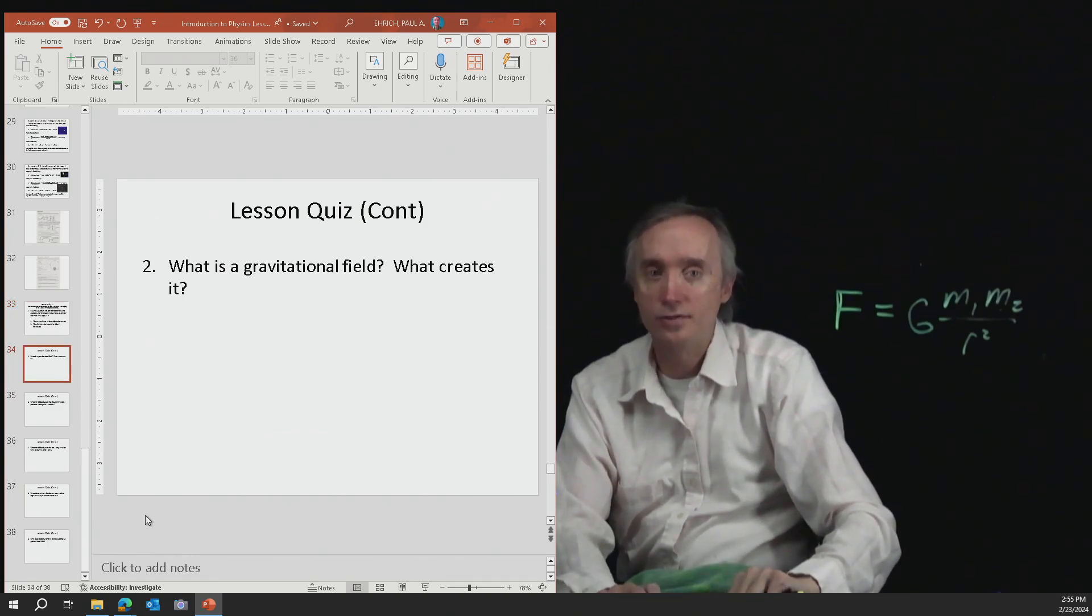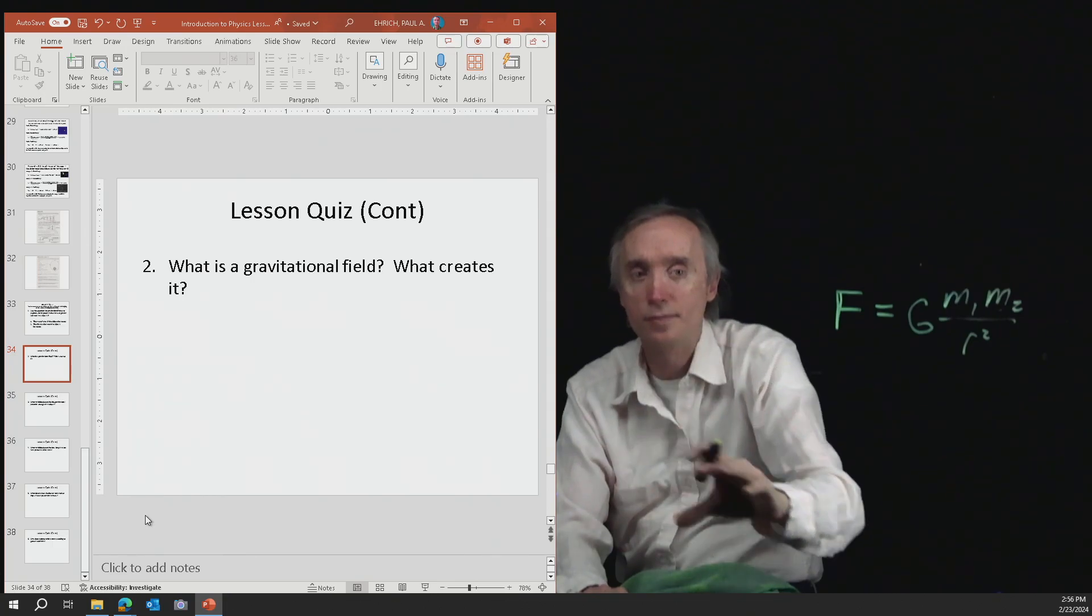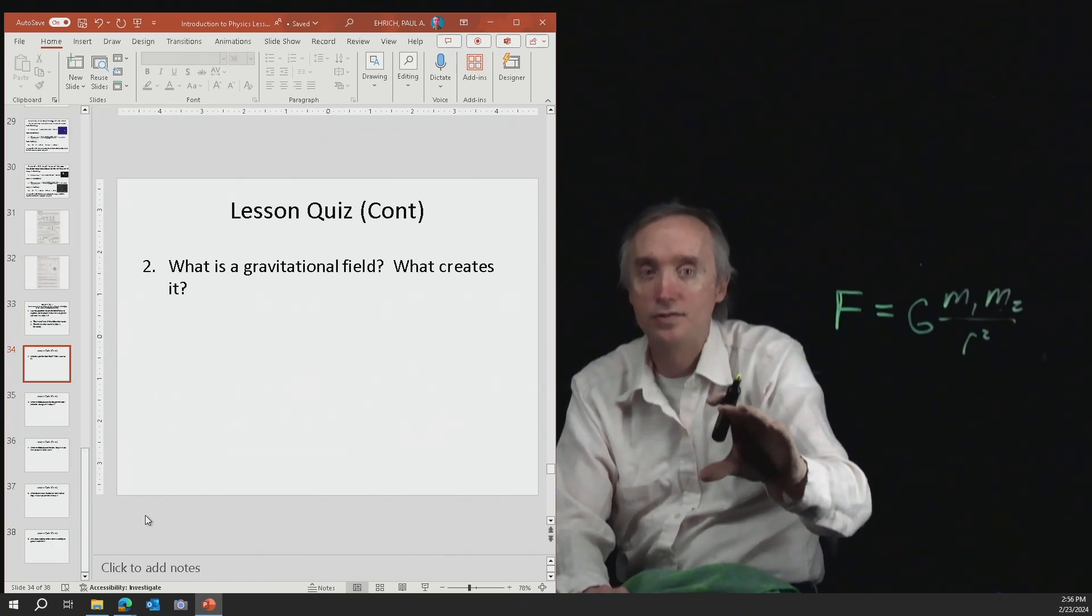Question number two, what is a gravitational field and what creates it? So a gravitational field is going to be a region of space that is going to surround a mass.